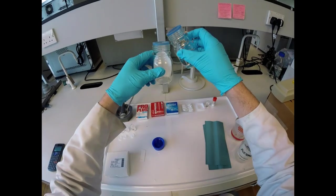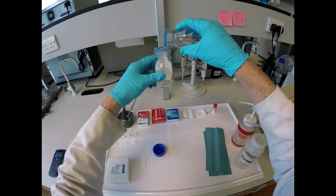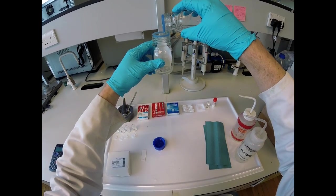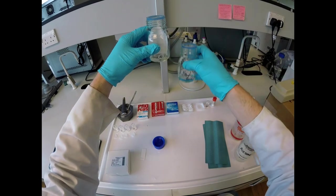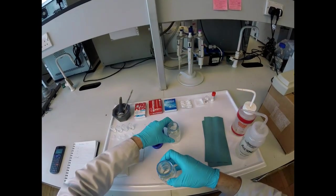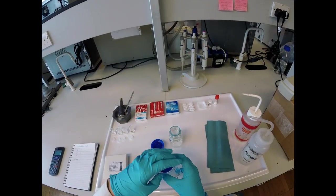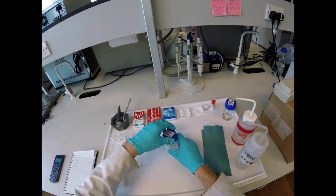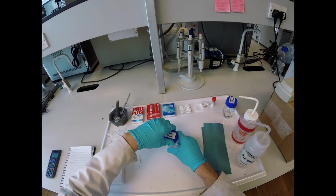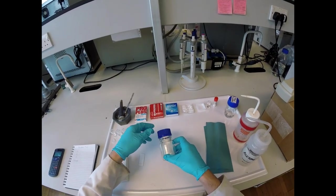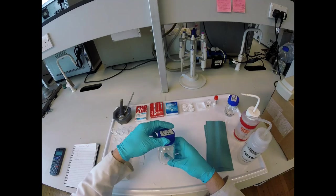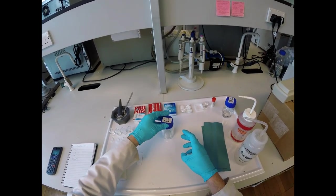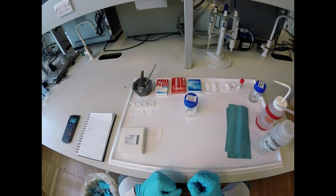I'm going to add in enough ethyl acetate, about half a centimeter's depth, so there's enough for the plate to run but not so much that when I put the plate in, the baseline is below the level of the solvent. Put the lid on and give that a swirl to wet the filter paper so that the atmosphere is nice and saturated.